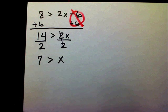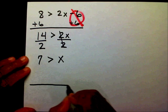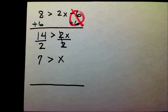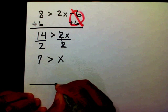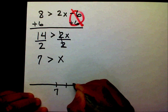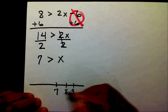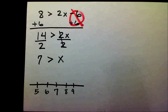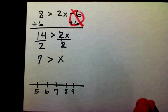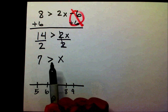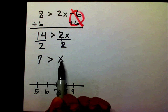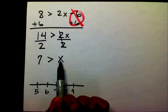Let's put it on the number line. When you draw a number line, you don't have to write the numbers from 1 to 10. Just take this number, put it in the center, and put 2 numbers on both sides. It says 7 is greater than x, so everything revolves around the 7.